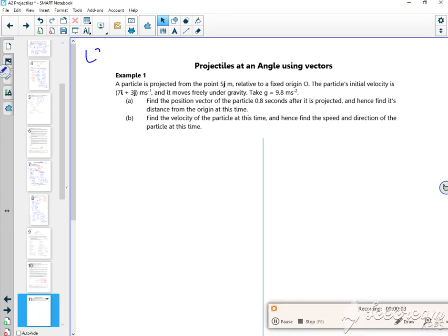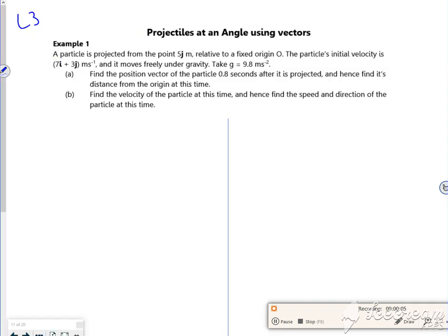Hi everyone, so this is the start of Lesson 3. I quite like this because it's exactly the same as what we've done, but it just gives something in terms of a vector. So you know how far across it is and you know how far up or down it is. It's exactly the same.